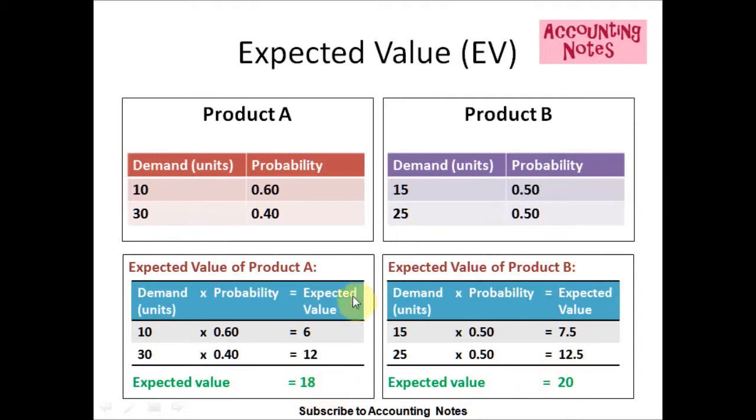Now let's calculate the expected value for Product B. We take the demand times the probability to get the expected value. The demand for the first week is 15, and the probability is 0.50. So, 15 times 0.50 equals 7.5 expected value for week 1.